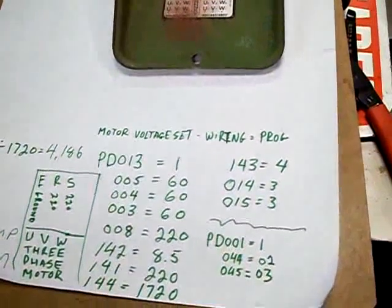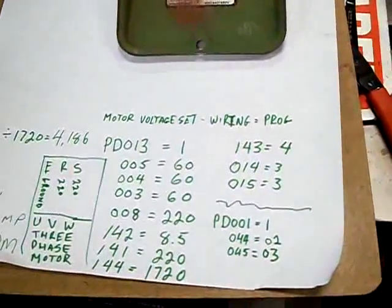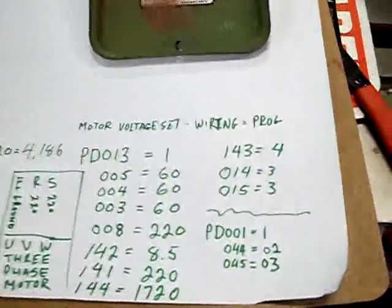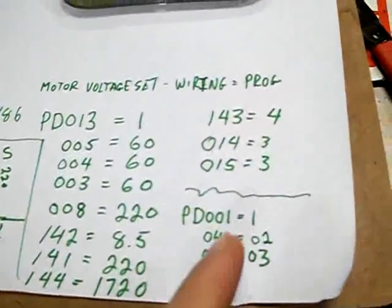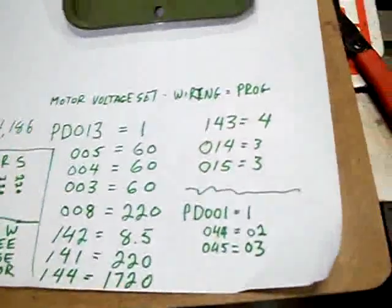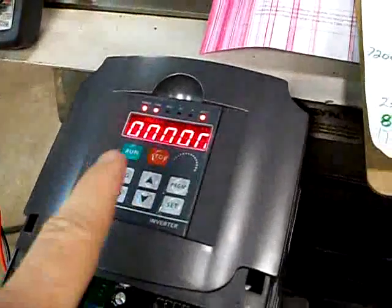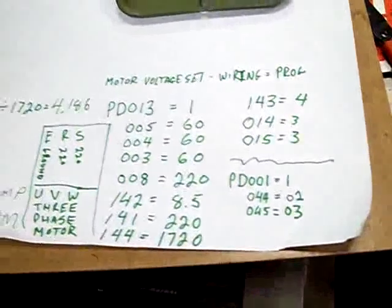And then these parameters here are set up for forward and reverse switch. So you just set up the 001. Once you set up that 001, you won't be able to hit run anymore to start the motor up. You're going to need to use a switch.